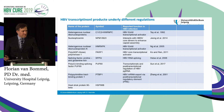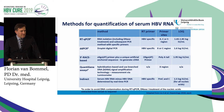Regarding methods for quantification of serum HBV RNA, there is no validated method. There are many different methods, all of them PCR-based. But as the methods are different and there is no validated assay at the moment, the results may be variable. There may be significant inter-test differences in results, making it difficult to interpolate from one study to another.